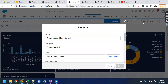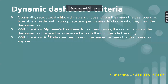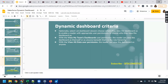Let's also talk about the last option: 'Let dashboard viewers choose whom they view the dashboard as.' This requires specific permissions. When a user has the appropriate permission, the viewer can view the dashboard as themselves or anybody else underneath the role hierarchy. When you have the 'View All Data' user permission, the person trying to view the dashboard can view it as anybody else. Those are the two permissions required to select this specific option.